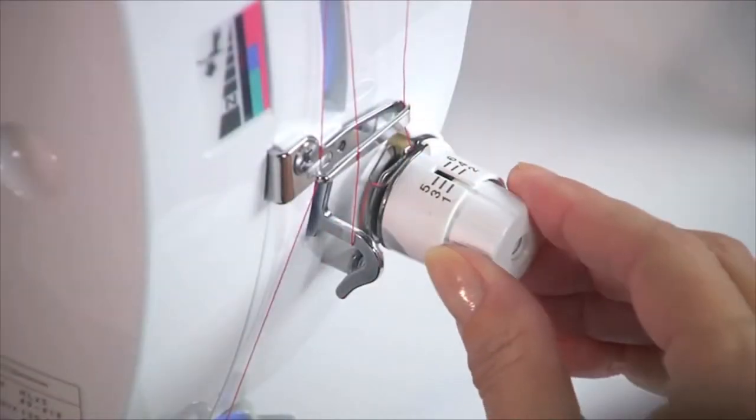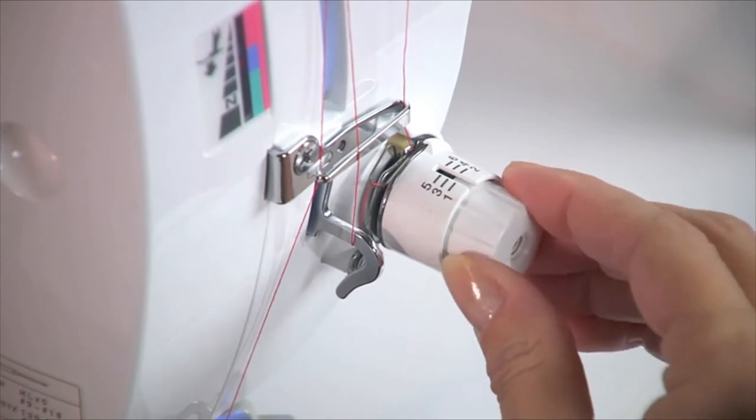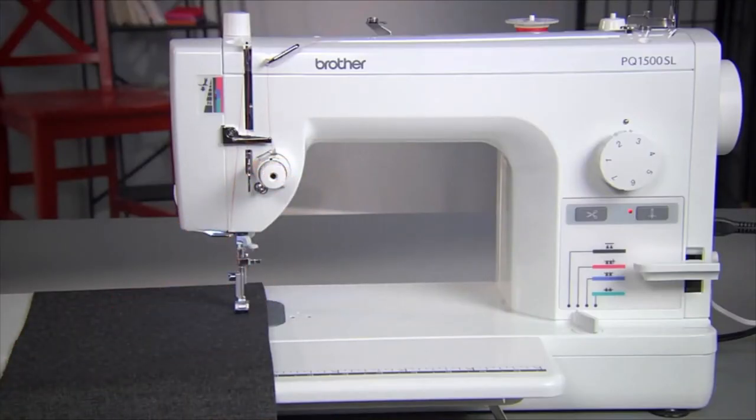Are you using a thicker or thinner thread in your bobbin and need to adjust your tension? Simply turn this dial a little at a time until you've got your ideal tension. Conveniently placed and easy to use.